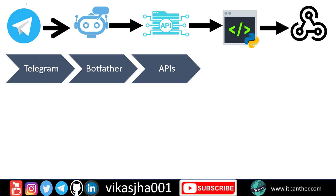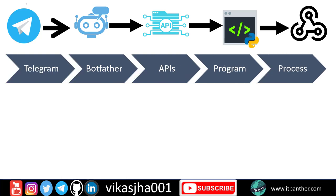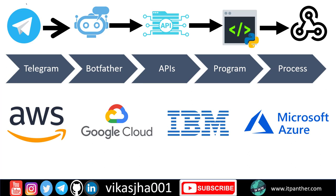By using this API we'll be able to see any latest message which has been sent by any user on Telegram, and then we are going to do some coding in Python and do all the processing there. Once your program is ready you are also going to host it on a cloud provider or hosting provider. I personally have hosted this program on IBM Functions, because I don't want to run this program 24/7 — I only want to execute it when I receive a chat on Telegram, making it very cost effective.